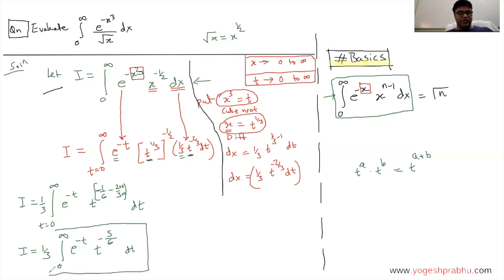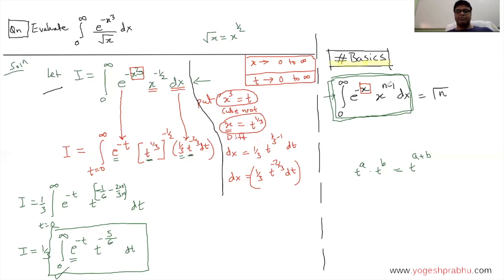Now we need to match this to the standard gamma form, and there must be an exact match. The limits are 0 to infinity — matching. We have e raised to minus t — matching. For the variable t, we need it in the form t raised to n minus 1. The standard procedure is to add 1 and subtract 1: minus 5 by 6 equals n minus 1, so this becomes t raised to n minus 1, meaning n equals 1 by 6. The answer of this integral is gamma of n, which is gamma of 1 by 6.